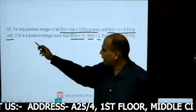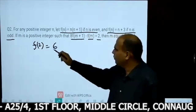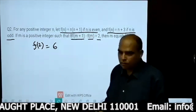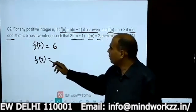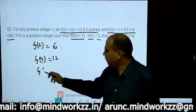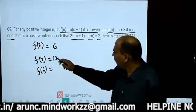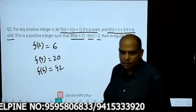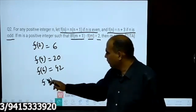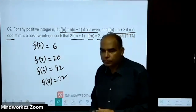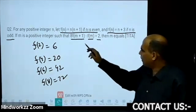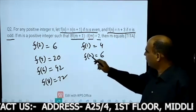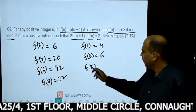First, let's compute some values. f(2) = 6. When n is even, f(4) = 12... actually f(4) = 20, f(6) = 42, f(8) = 72. For odd values: f(1) = 4, f(3) = 6, f(5) = 8.